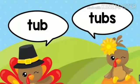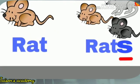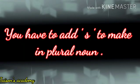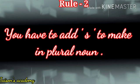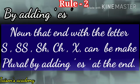Top/tops, rat/rats. You see that we have added S to the singular word to make it plural. Now we will learn our second rule — by adding ES. Nouns that end with the letters S, SS, SH, CH, and X can be made plural by adding ES at the end.